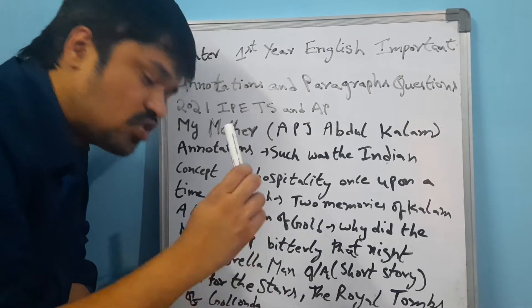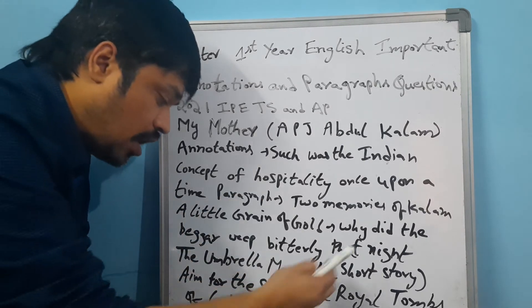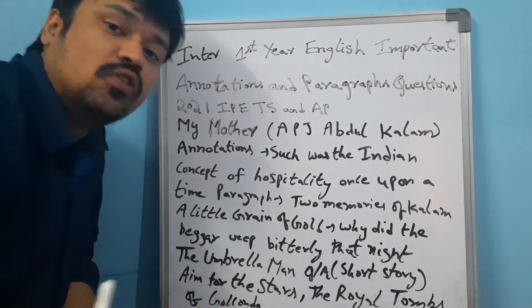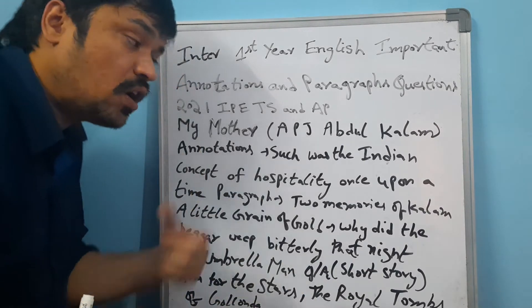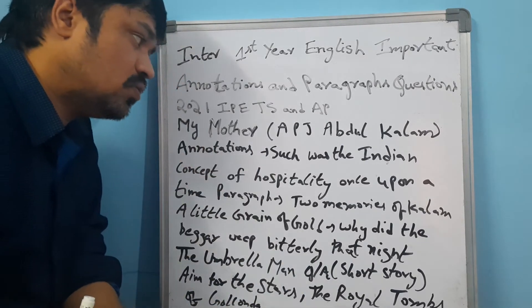Next is 'Aim for the Stars,' followed by 'The Royal Tops of Gorkonda.' Both of these are important topics to prepare for the examination.